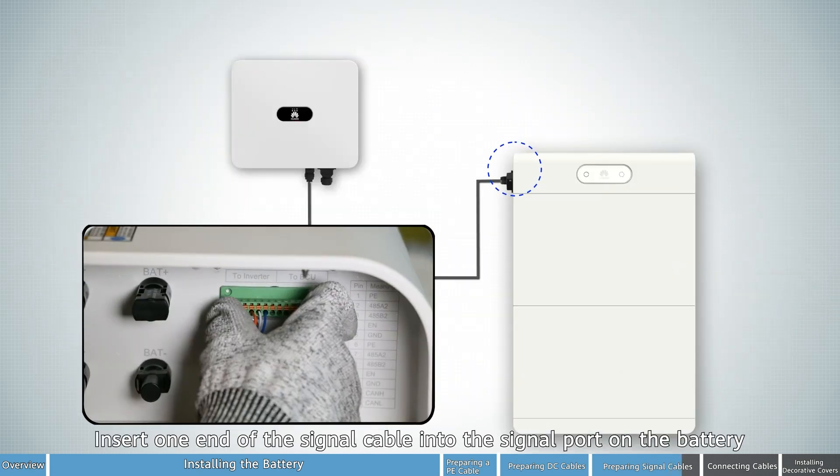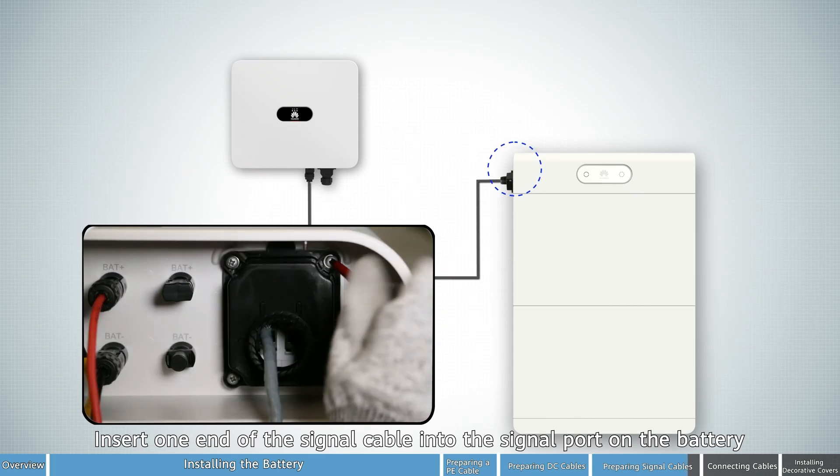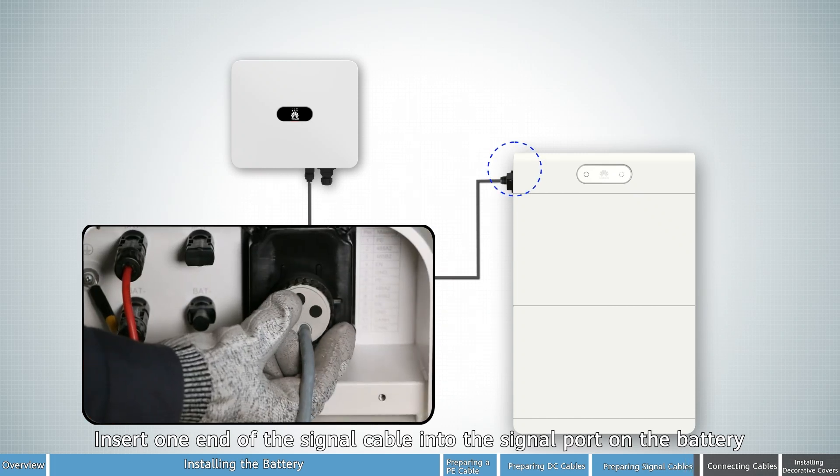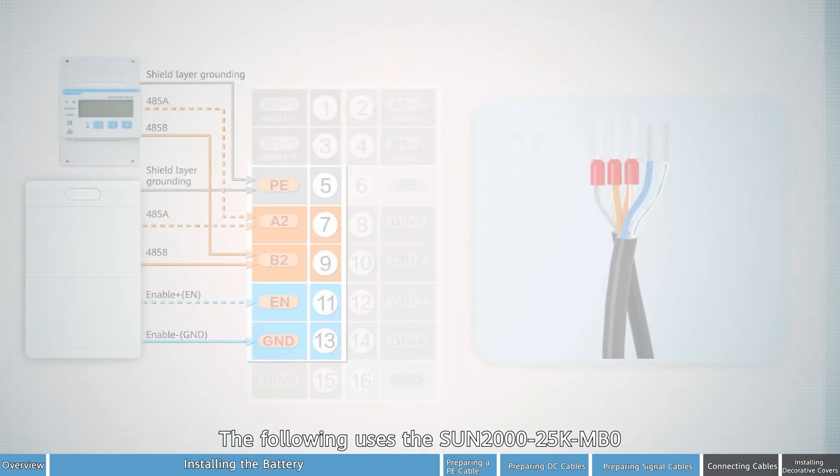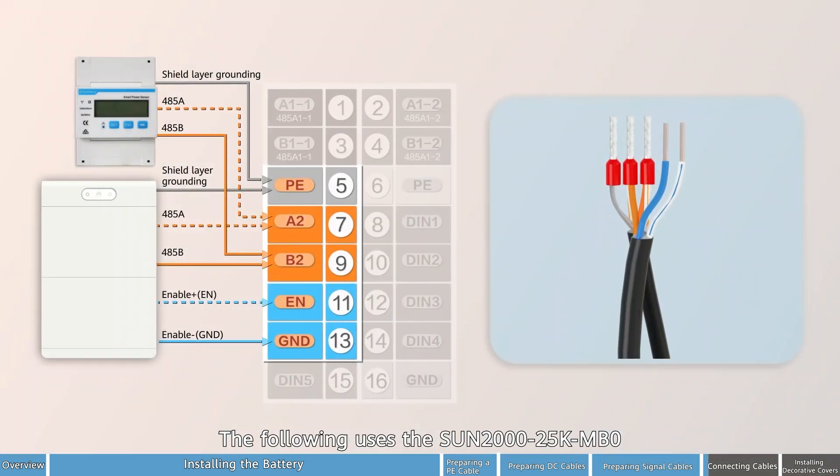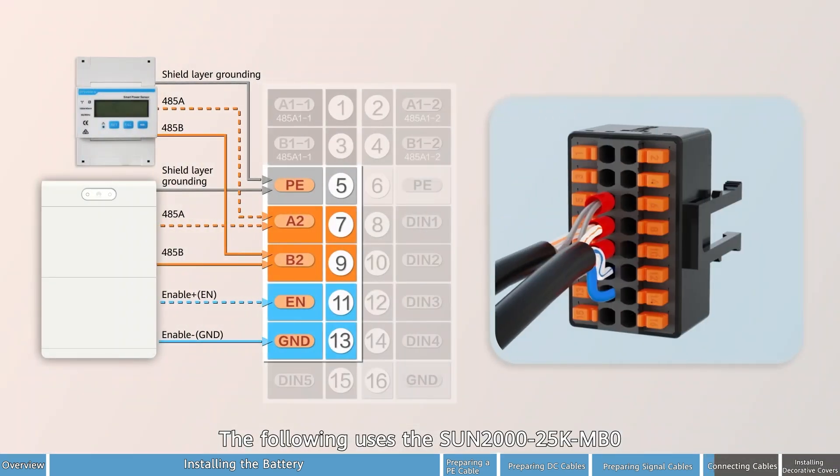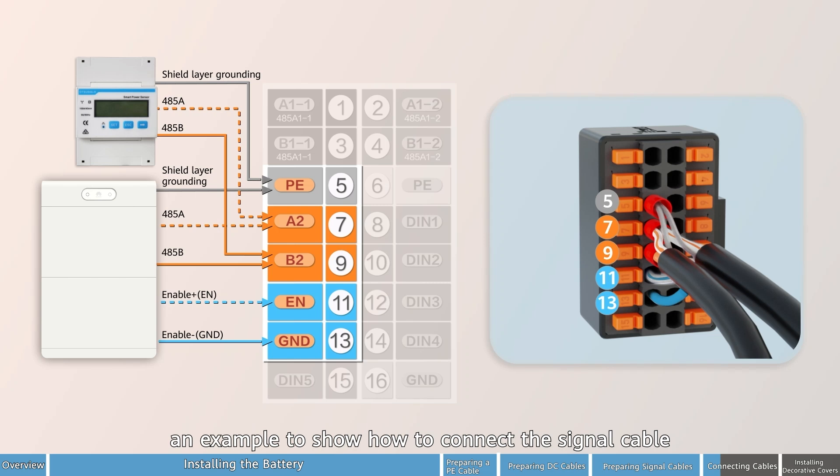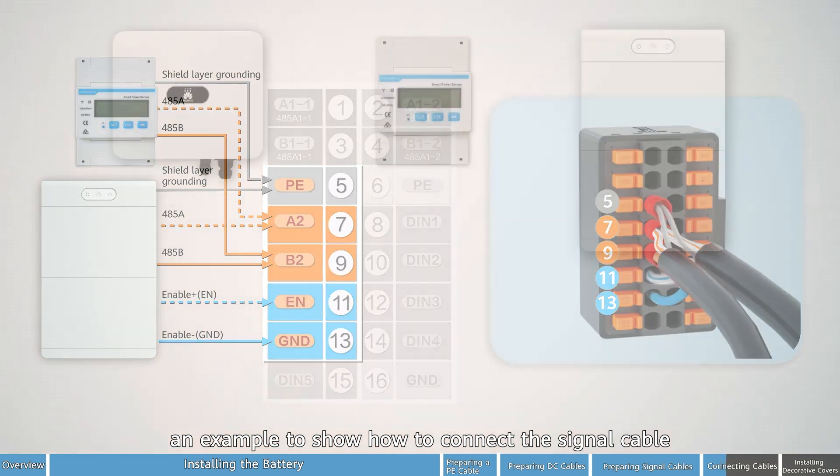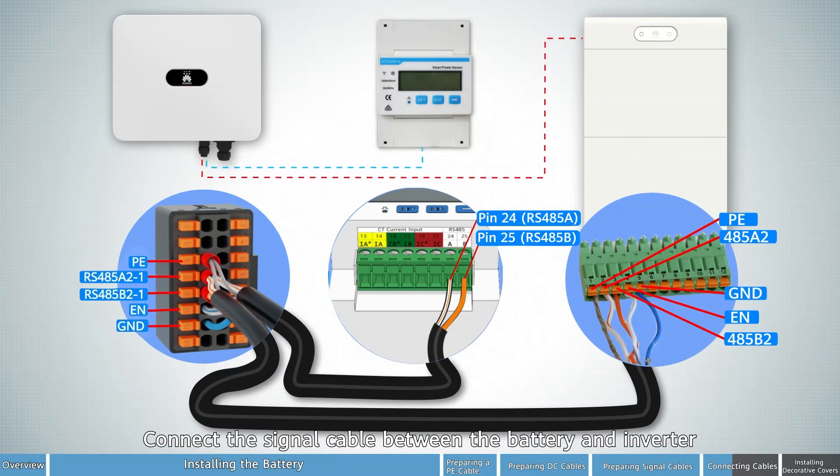Insert one end of the signal cable into the signal port and the battery. The following uses the Sun 2025K MB0 as an example to show how to connect the signal cable. Connect the signal cable between the battery and inverter.